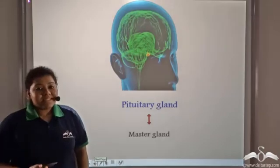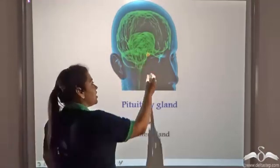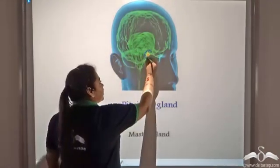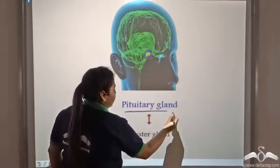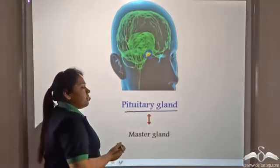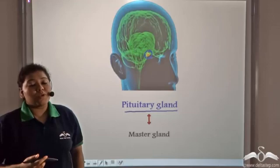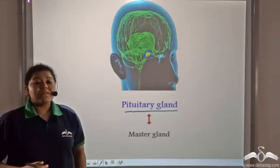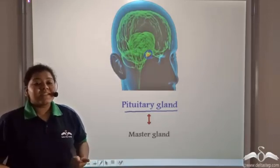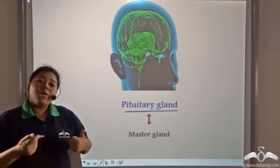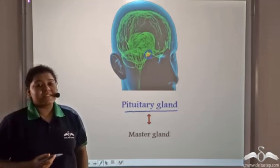This gland in the brain is known as the pituitary gland and it is the master gland of the body because it stimulates the secretion of hormones from all other endocrine glands.